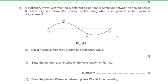Part C: a stationary wave is formed on a string stretched between two fixed points X and Y. Figure 4.2 shows the string at maximum displacement. Part 1: explain what is meant by a node. A node is a point where the amplitude is zero.